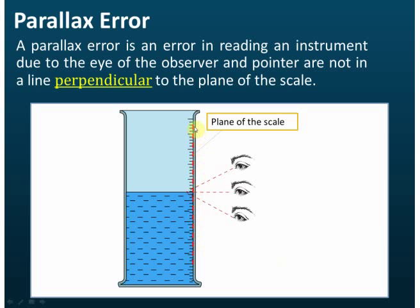We have a scale here. This is called the plane of the scale, and this is the eye of the observer. In this case, at this position, the eye of the observer is at a right angle or perpendicular to the plane of the scale, and this is the correct position for the eye of the observer.